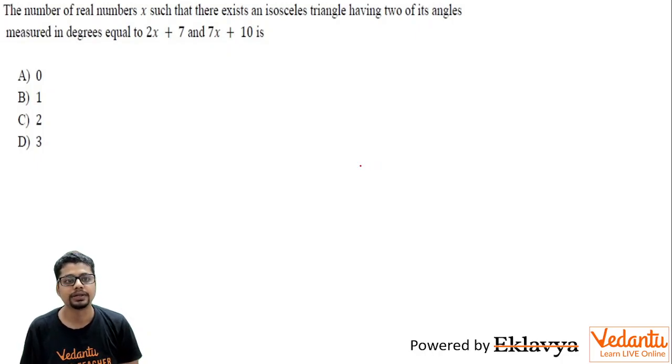Hi everyone, the question is: the number of real numbers x such that there exists an isosceles triangle having two of its angles measured in degrees equal to 2x plus 7 and 7x plus 10 is...